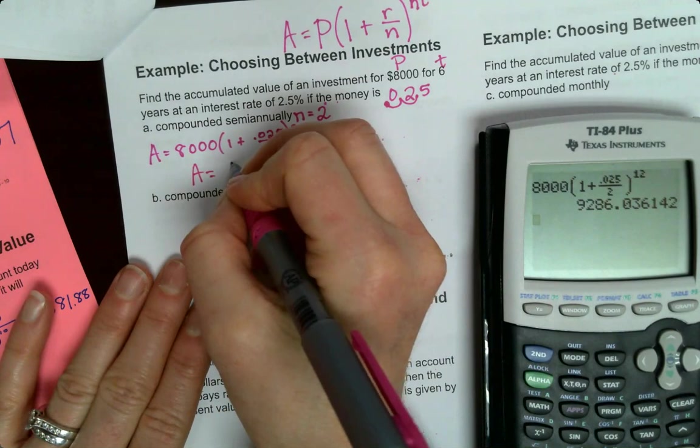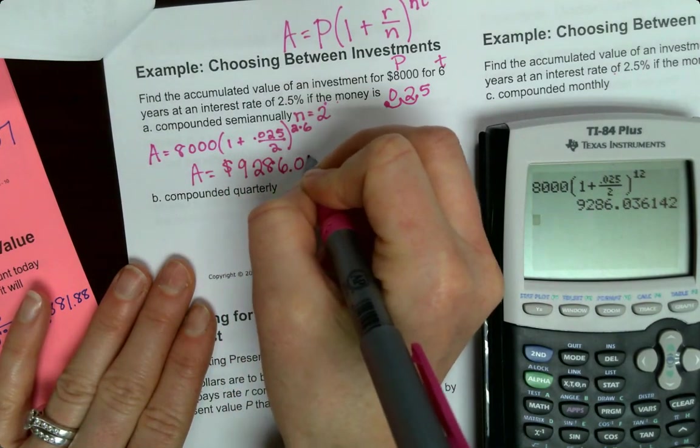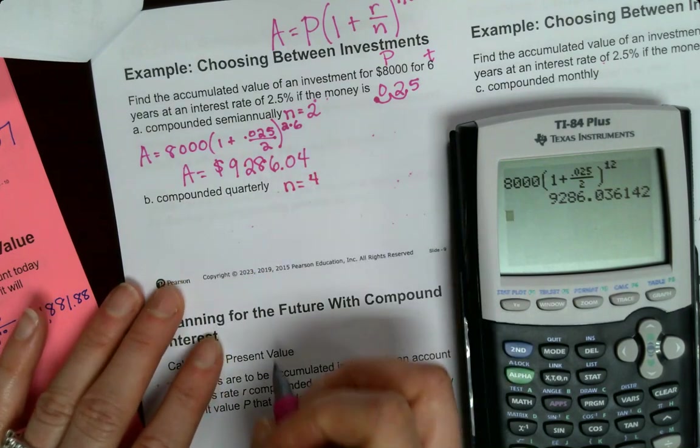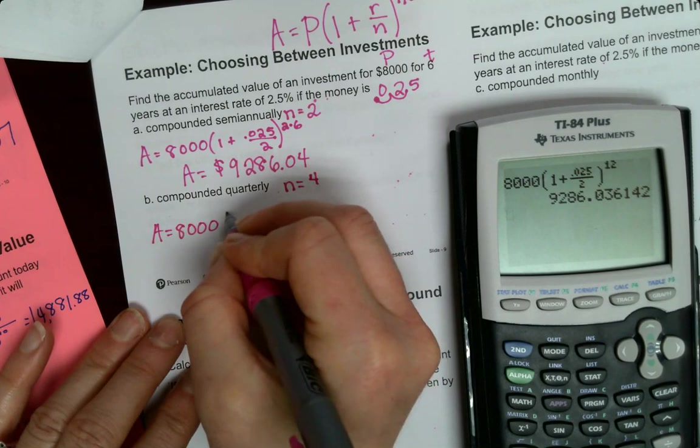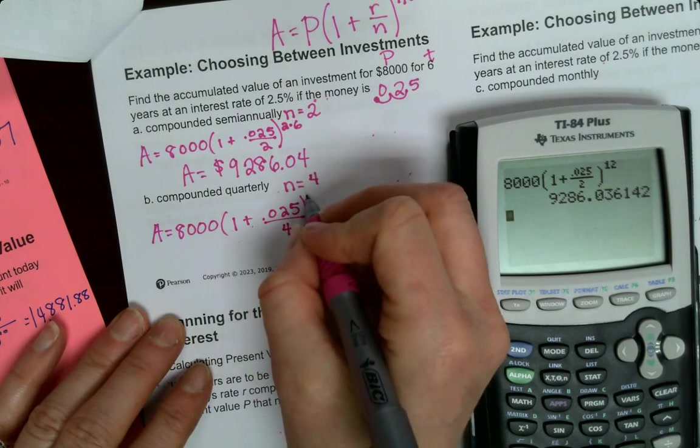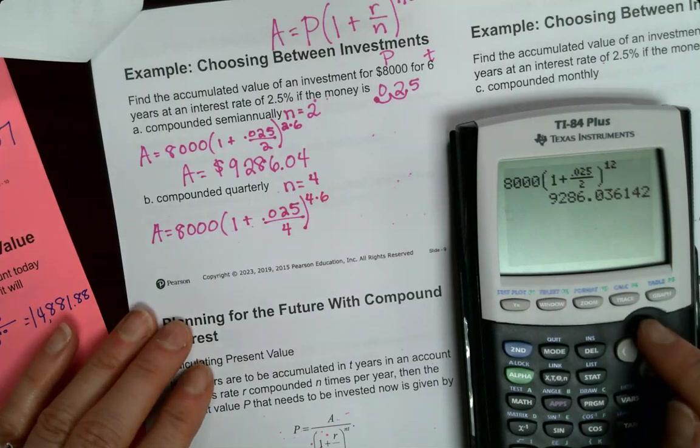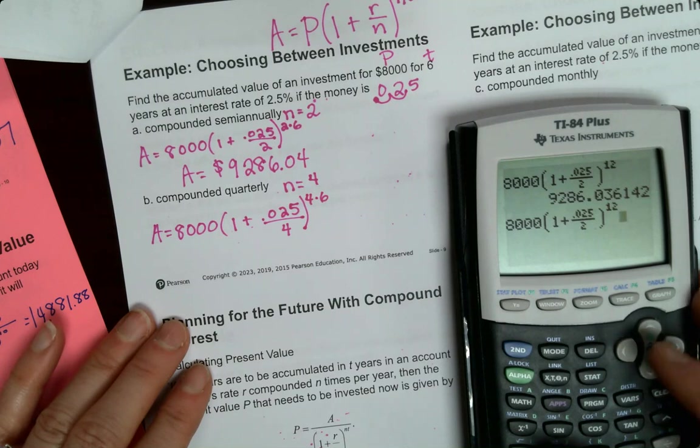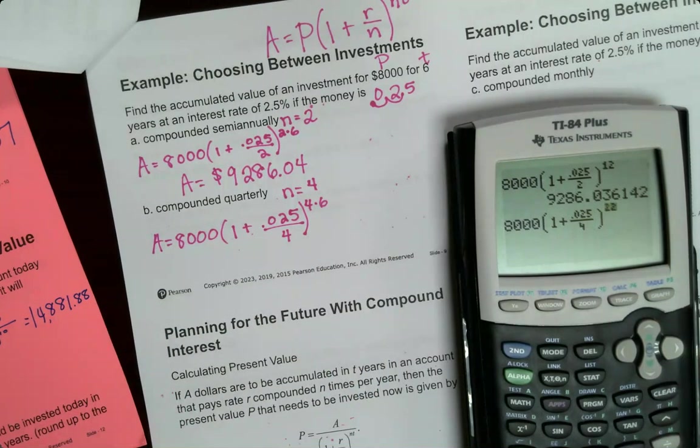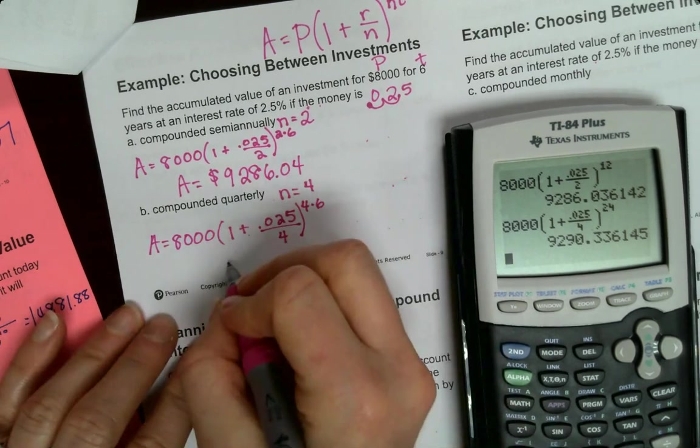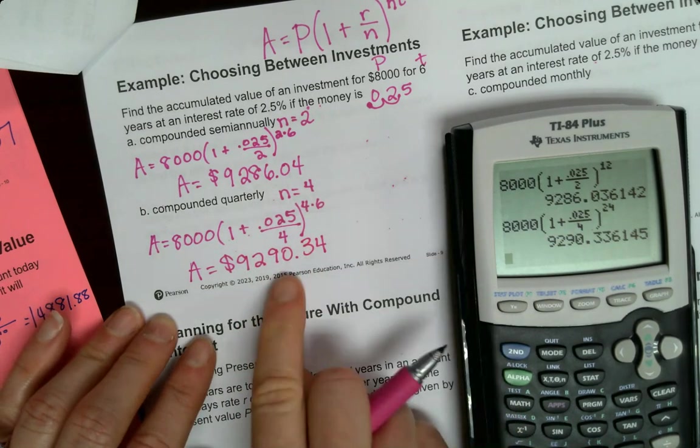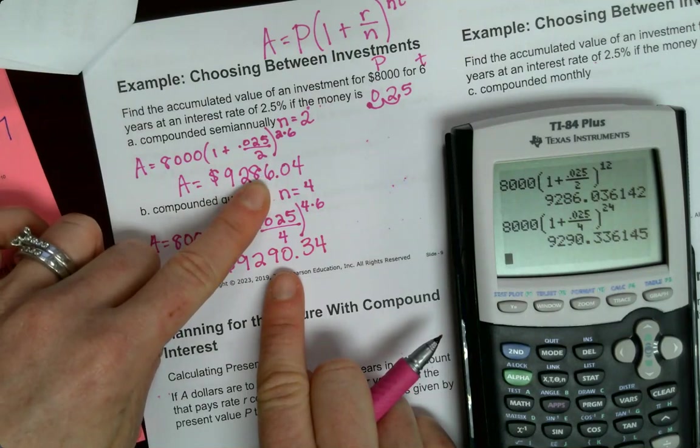So we can put that directly into the calculator or you can simplify it before. Two times six is twelve. I could go ahead and simplify that. Make sure you know how to put this in your calculator and make sure you know what each value represents and how we're using that formula. So for semi-annually it's 9,286. Quarterly, so it's going to be the same formula except quarterly there are four quarters. Same exact equation, the only thing that's changing is the n value.